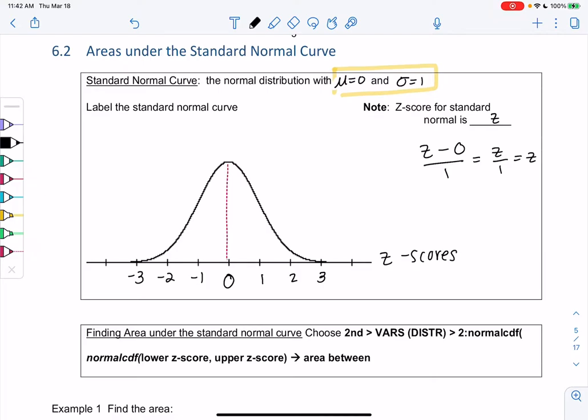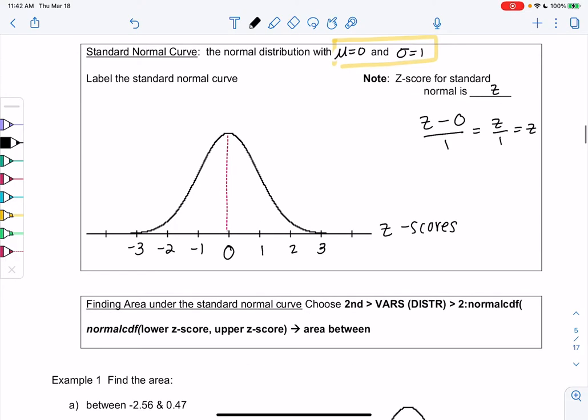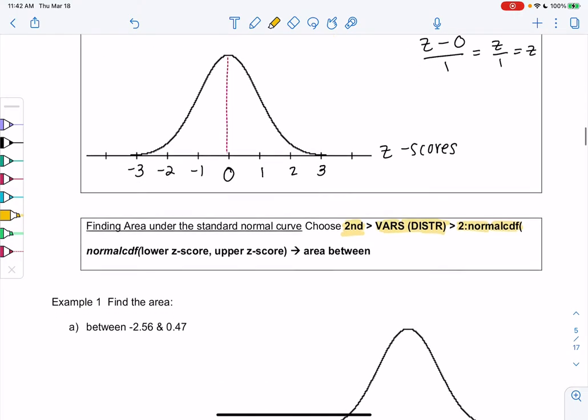So if we want to find area under the standard normal curve, this is the menu on the calculator, which we'll go over in a second. So we'll hit second, we'll hit vars, we'll do that in the next example. And then we'll find this thing called normal CDF. So as we do example 1, I'll show you where that is.